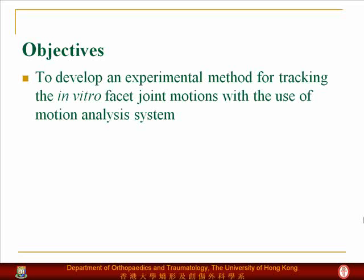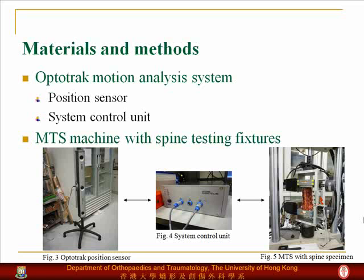The objective of this study is to develop an experimental method for tracking the in vitro facet joint motions with the use of a very accurate motion analysis system. We used a human cadaveric lumbar spine specimen to study the facet joint kinematics. The lumbar spine specimen was loaded onto an MTSR spinal testing fixture, which is synchronized with the three-dimensional motion analysis system.